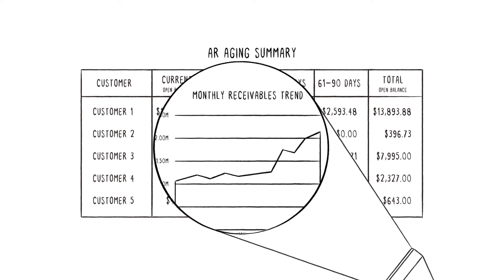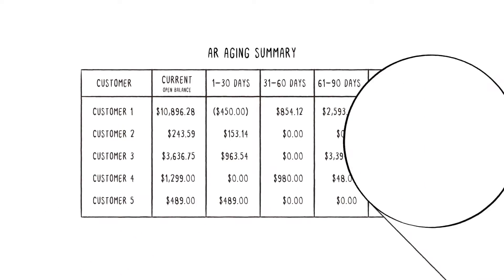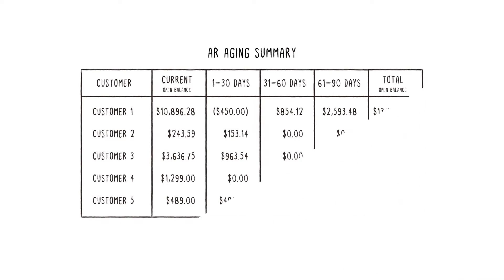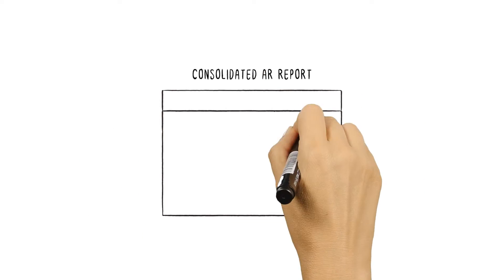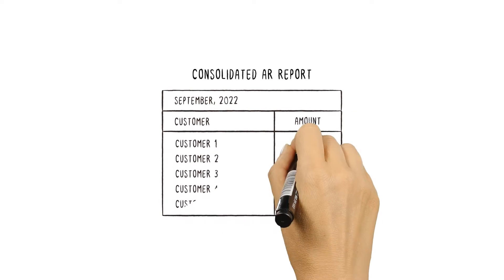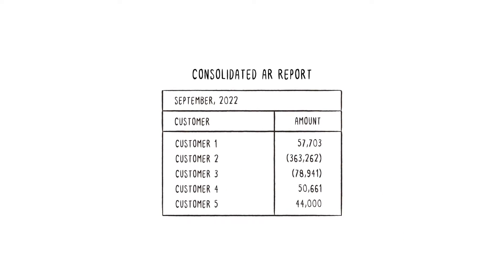Let's look at three key AR report types. A consolidated AR report provides a summarized picture of all receivables due from the company's customers. Accounting teams can use this to see which customers pay quickly and in full.